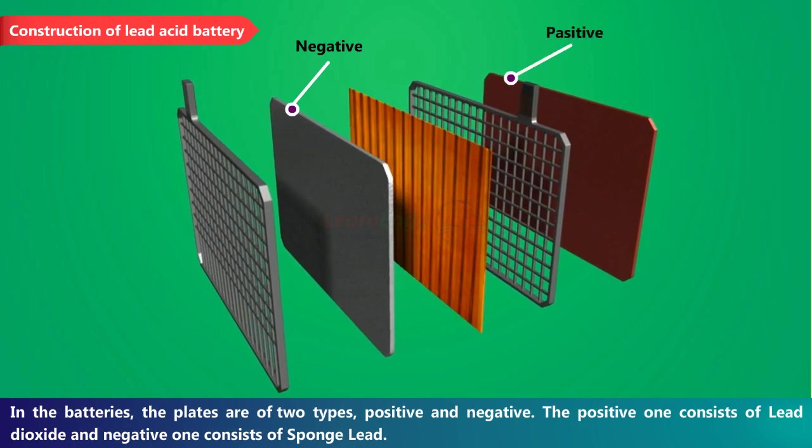In the batteries, the plates are of two types positive and negative. The positive one consists of lead dioxide and negative one consists of sponge lead.